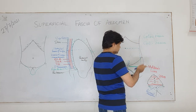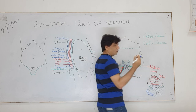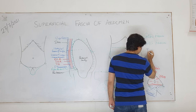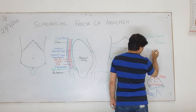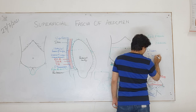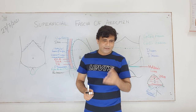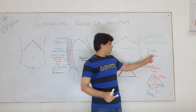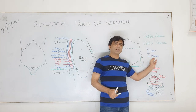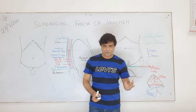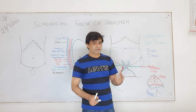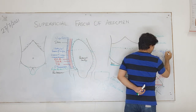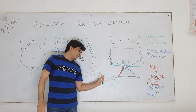For those not strong in spelling - there is ileum and ilium. Remember the 'e' in ileum - it is related to the gut. So ileum is a part of the gut and part of the small intestine. Ilium is part of the bone. Now again coming back to fascia Scarpa, which continues as Colles' fascia.